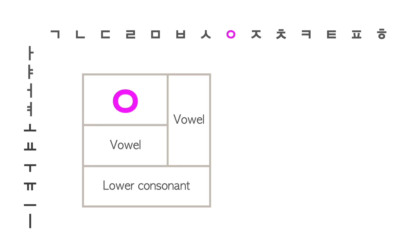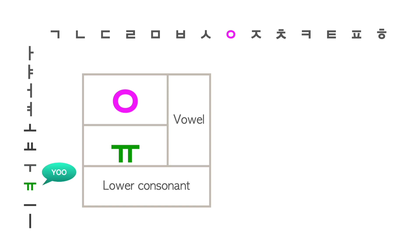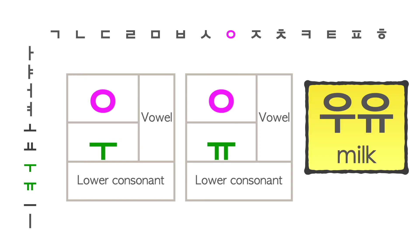For the first consonant, let's start with 이응. Putting the vowel 우 with the consonant 이응 makes the letter 우. Putting the vowel 유 with the consonant 이응 makes the letter 유. These two letters make the word 우유, which means milk.